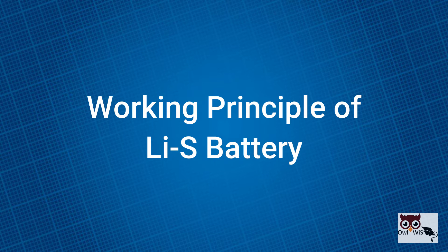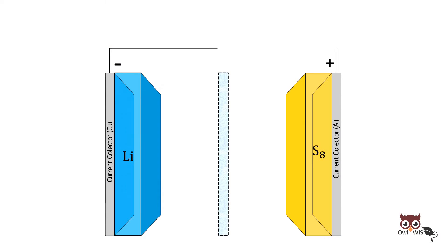Working Principle of Lithium Sulphur battery. During discharge, at the anodic surface, dissolution of metallic lithium occurs with the production of lithium ions and electrons.